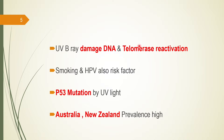Telomerase reactivation is another cause. Telomerase is an enzyme that prevents telomere shortening. We know that cells can divide only up to 60 to 70 times because of the shortening of telomeres - telomeres being a short stretch of DNA present at the end of chromosomes. The telomerase enzyme can prevent telomere shortening and cancer cells become immortal because of this enzyme. That is also one of the etiologies for development of BCC. Smoking and human papilloma virus also put you at risk of developing BCC.